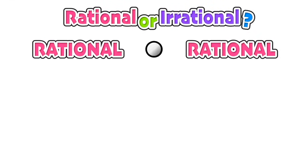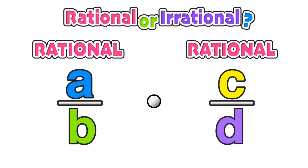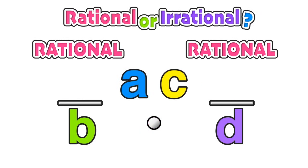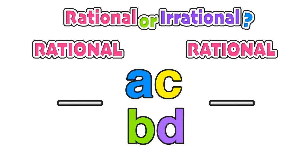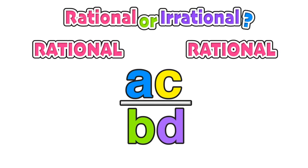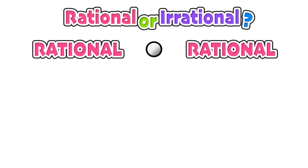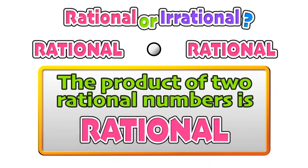Next, we are interested in whether the product of two rational numbers is rational or irrational. We start with the rational number A over B and multiply it by another rational number C over D, where A, B, C, and D are all integers. When multiplying two fractions, we simply multiply the numerators together — A times C is AC — then multiply the denominators — B times D is BD. This is all one fraction, and even though we don't know what these products are, it is still represented as a ratio and therefore is still a rational number. We can conclude that the product of two rational numbers is still a rational number.